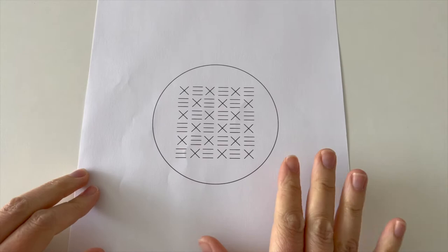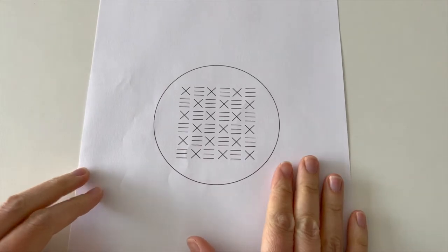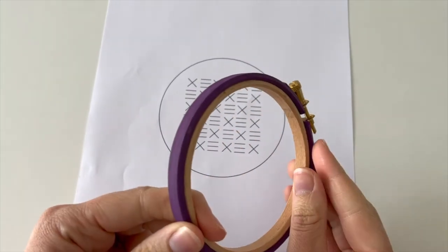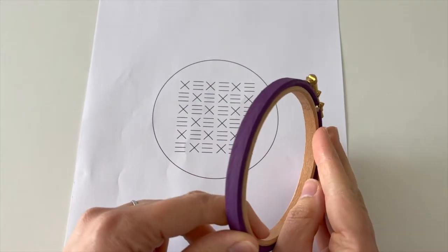Hello, this week we are stitching a little hoop with brick and cross stitch. This template is for a four inch hoop. I'm going to use this lovely purple. I hope you can see how nice that is on there.